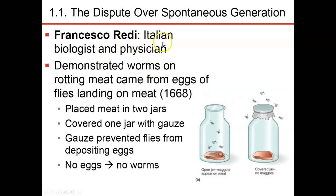Francesco Redi was an Italian biologist and physician. He took meat and placed one piece in a jar open to the environment and another in a jar covered with cheesecloth, which allowed air to flow in but prevented flies from entering. His hypothesis was that the worms were coming from flies laying eggs. In 1668, he showed that the gauze prevented flies from depositing eggs, so there were no worms on the covered meat — but there were worms on the open meat where flies could lay eggs.